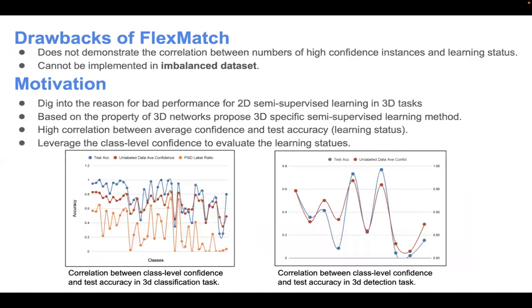However, we still find some drawbacks for FlexMatch. Firstly, it doesn't demonstrate the correlation between numbers of high-confidence instances and learning status. Secondly, it cannot be implemented in imbalanced dataset.